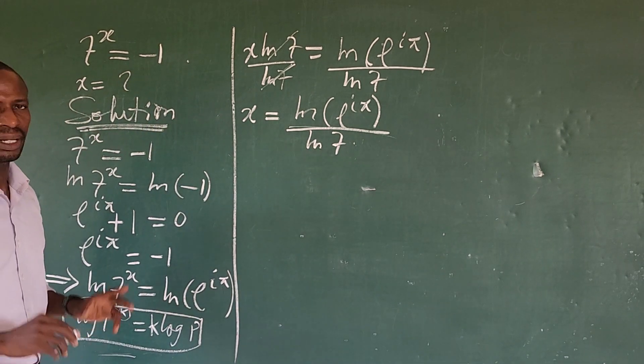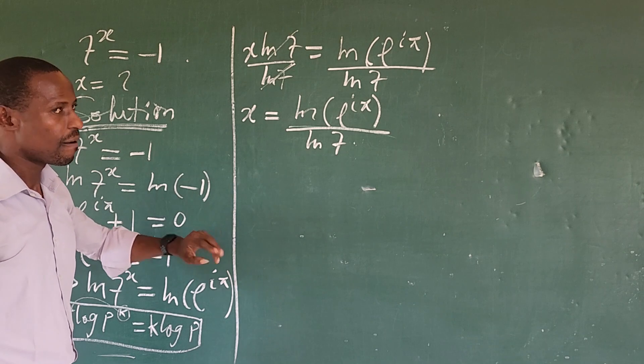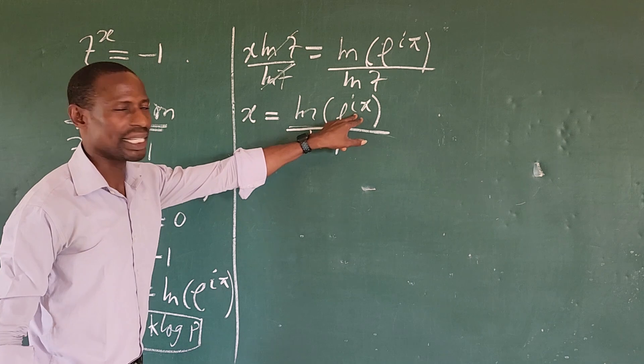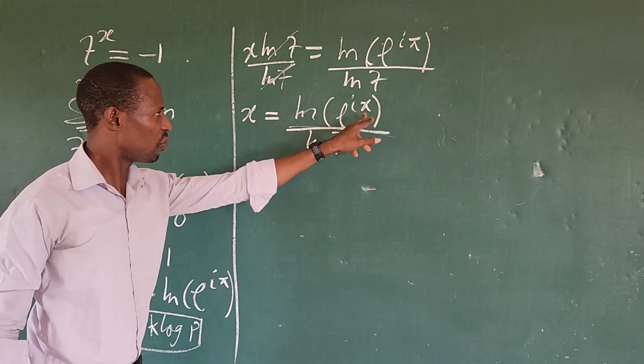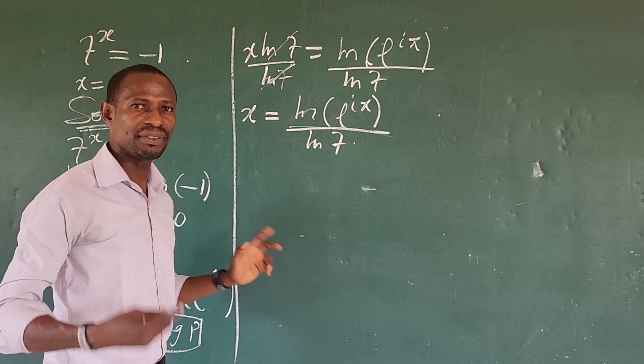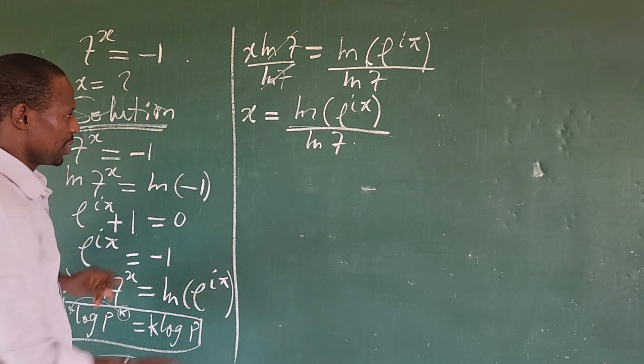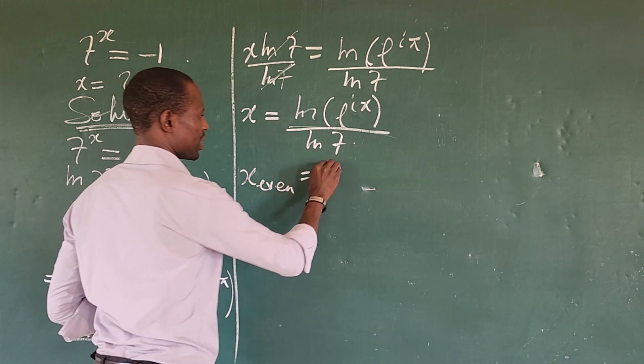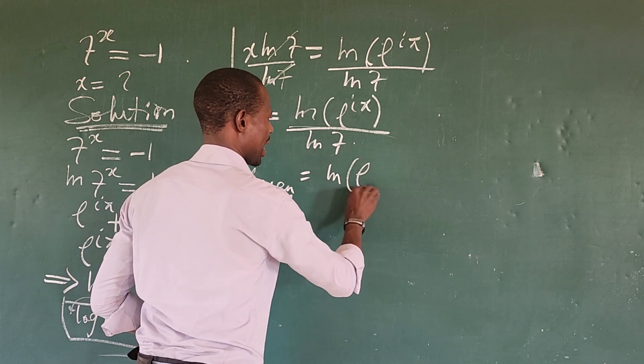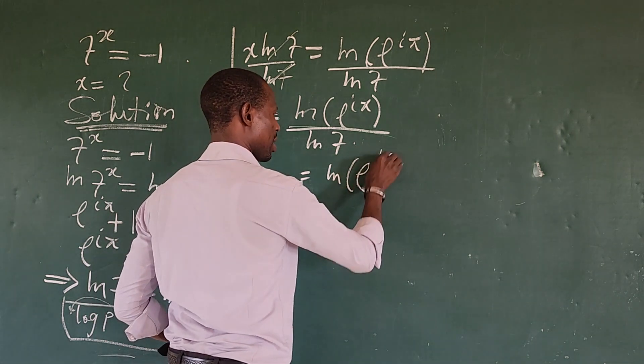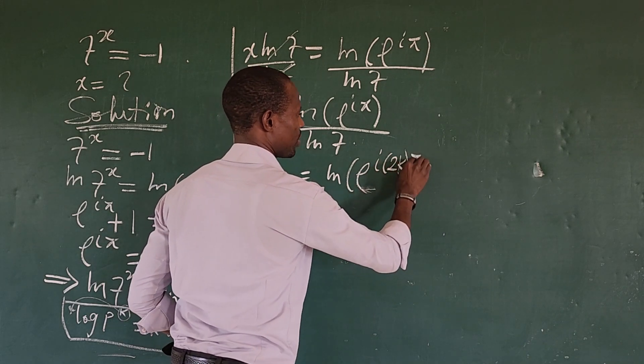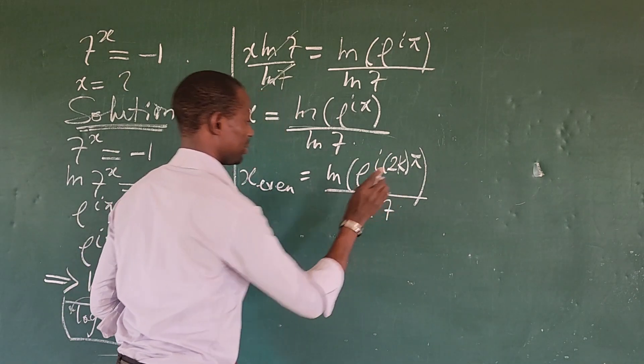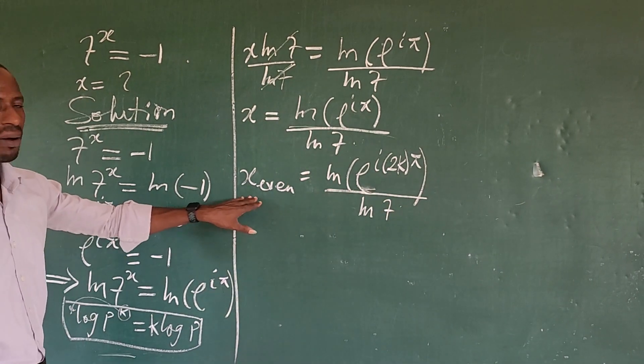But is this the final answer? No. Now, at this point, if you look at this, for the even value of x, we're going to multiply this by 2k for the even value of x. This is going to give us ln of E to the power of iota times 2k pi, all over ln of 7. This for the even value of our x.